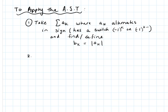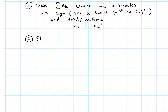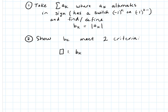Then we're going to examine that new series of terms b sub k — the terms with no switch — and show that b sub k meets two criteria. The first criteria we check is that b sub k is decreasing: show that b sub k plus one is less than or equal to b sub k.